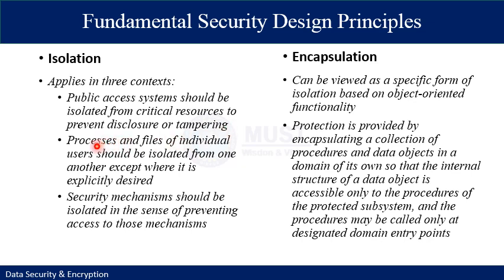The second form of isolation is that processes and files of individual users should be isolated from one another, except where explicitly desired. All modern operating systems provide such facilities. Files and processes of each user are isolated unless explicitly desired. Individual users have separate isolated process space, memory space, and file space, with protections to prevent unauthorized access.